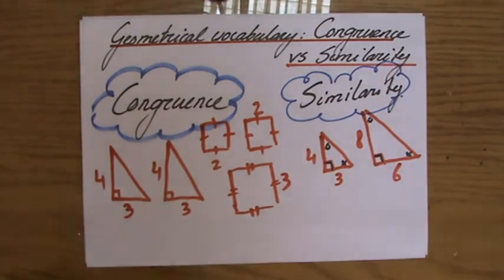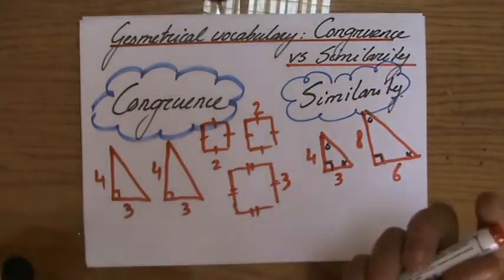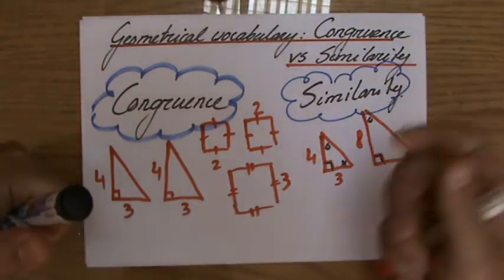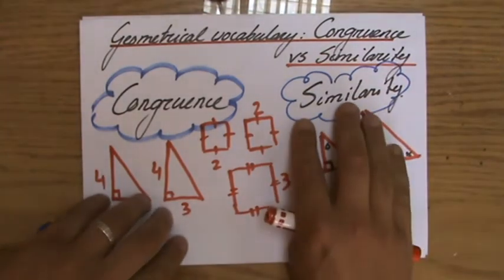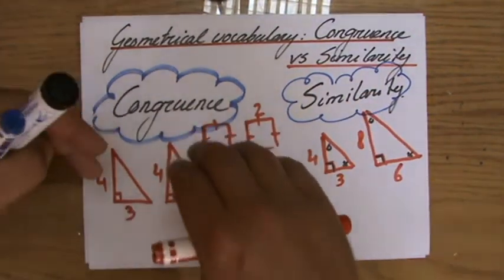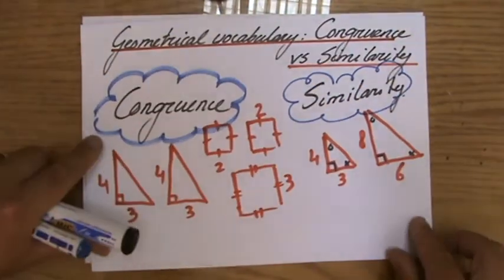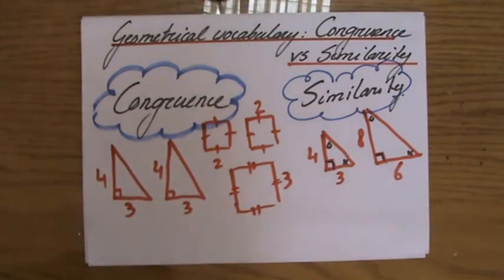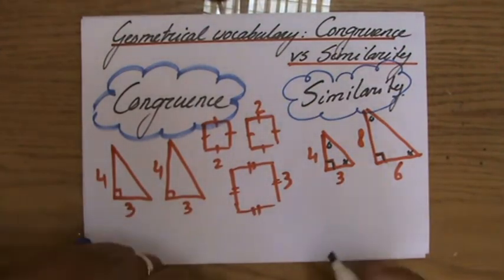And in my future videos, I will talk more about similarity and how to calculate similarity, or how to calculate lengths and angles. But that's important to realize the difference between similarity and congruence. Congruence needs to be identical, similarity, corresponding angles the same, corresponding sides in proportion.